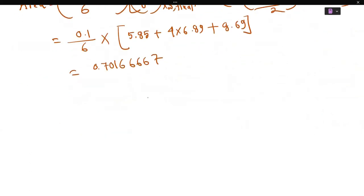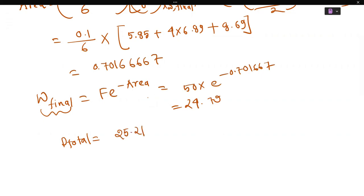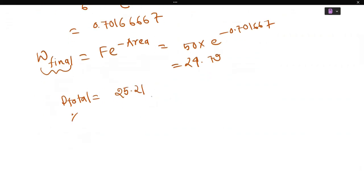w final is equal to f into e to the power minus area. So you can take f and calculate e to the power 0.701667. Using the mass balance, xd equals f minus w final divided by w final, which gives xd equal to 0.8983.